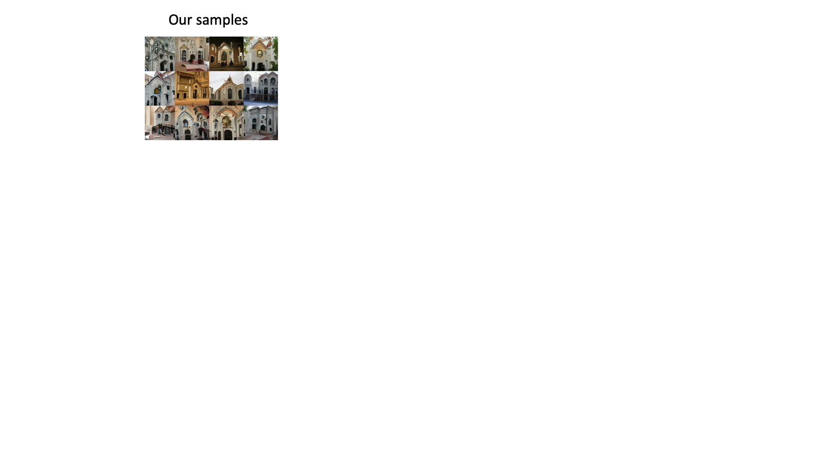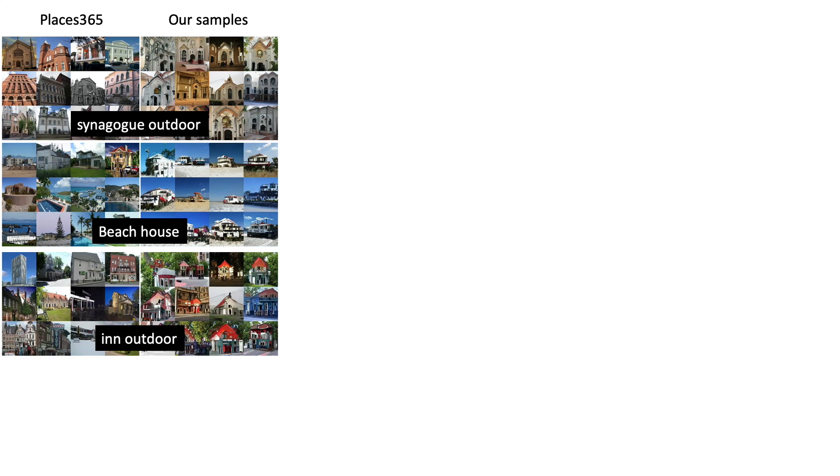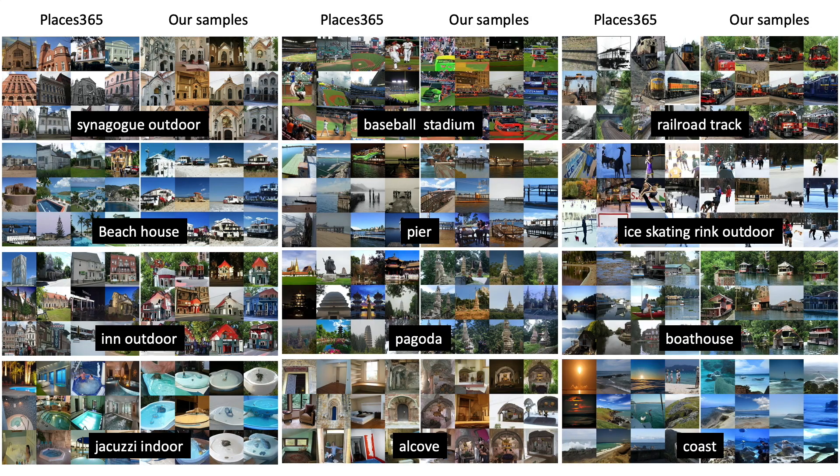That is, the same ImageNet generator can be repurposed to generate samples for Places365 categories like outdoor structures, beach house, buildings, and many others.